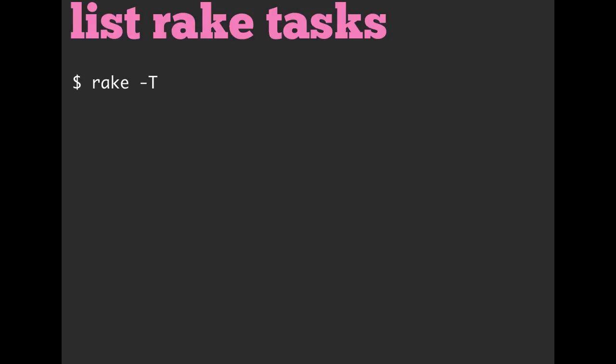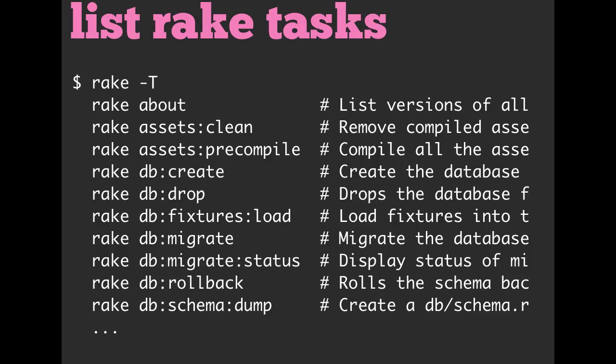If you are in a project and you want to get a list of all Rake tasks that have a description on it, you can call Rake -T. Here I've gone to a Rails project and run Rake -T, and that's the output — these are all different Rake tasks I can run. I can run Rake About, Rake Assets Clean, Rake Assets Pre-Compile, Rake DB Create, Rake DB Drop, and some of these things we've done before.